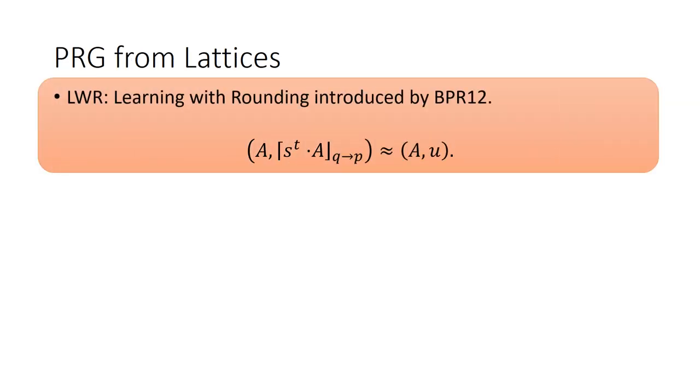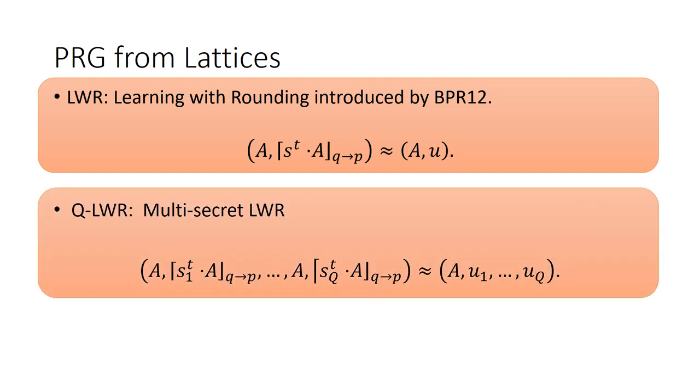More formally, LWR states that given matrix A, the rounding of vector S times matrix A is indistinguishable from the true random vector U. Then, it is natural for us to get QLWR, multi-secret LWR. This means the rounding of multi-vectors times matrix A is also indistinguishable from the true uniform. Hence, we can use QLWR to represent Q-PRG. And furthermore, we consider how to eliminate Q in the security loss of QLWR from LWE.